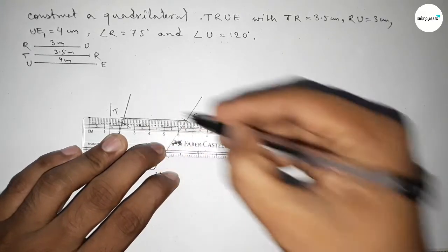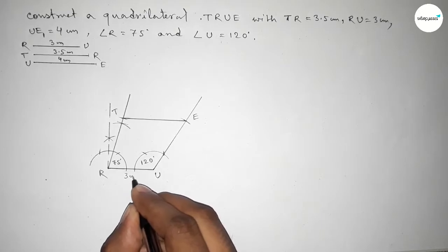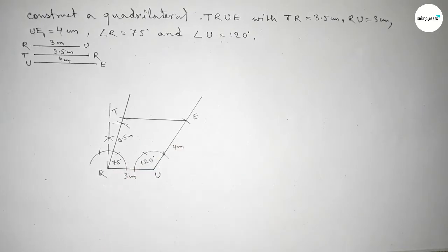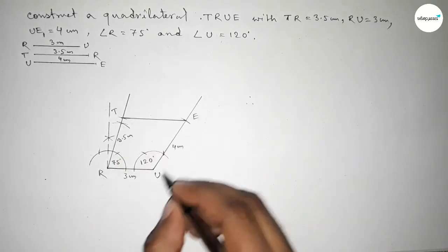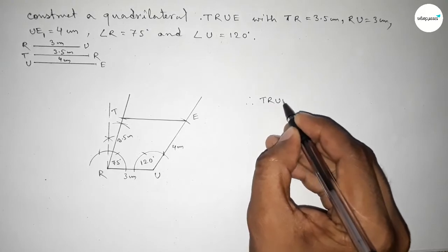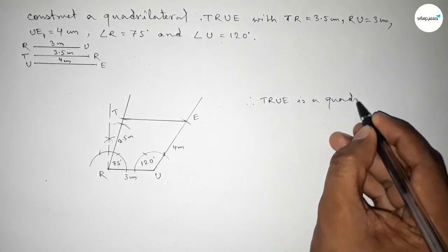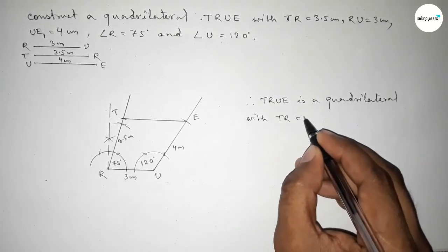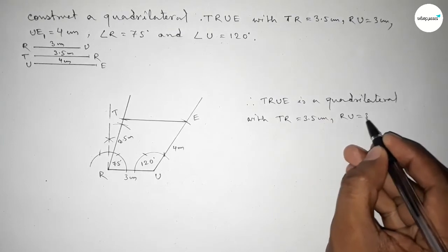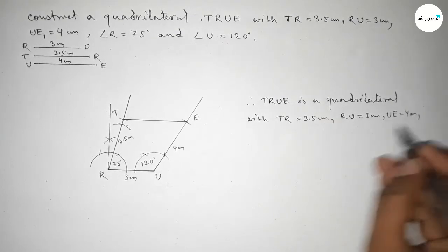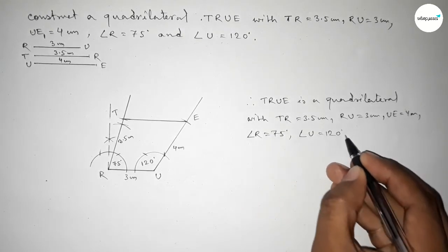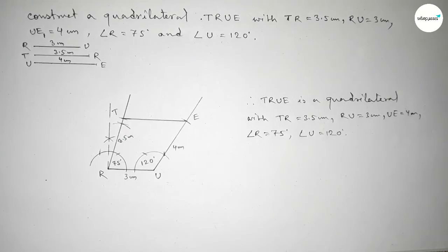Now joining T and E. This side is 3 centimeters, this side is 4 centimeters, and this side is 3.5 centimeters. Therefore, quadrilateral TRUE is constructed with TR equal to 3.5 centimeters, RU equal to 3 centimeters, UE equal to 4 centimeters, angle R equal to 75 degrees, and angle U equal to 120 degrees. Thanks for watching — please share it with your friends!